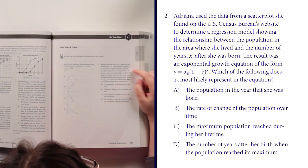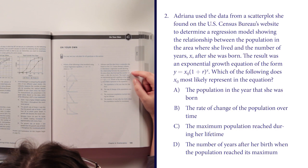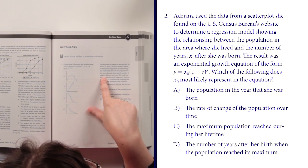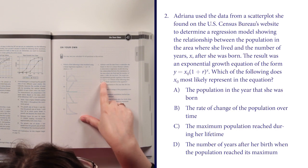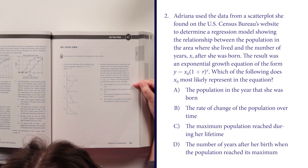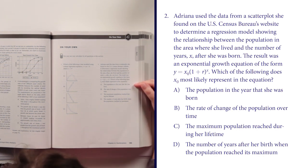So the starting value for Adriana seems to be, it says x years after she was born. So zero would be the year she was born, so the population in the year that she was born, which is answer choice A.